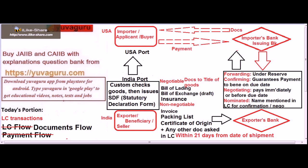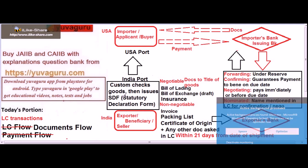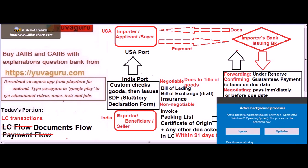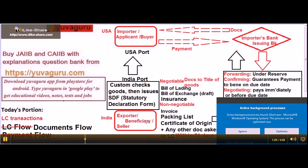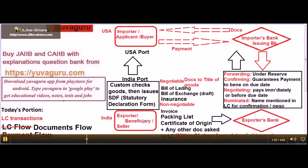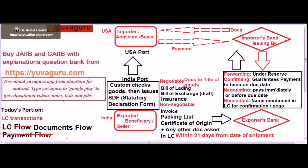Customs then issues a statutory declaration form — earlier the JR form was issued, now it has been replaced by SDF. The seller, or beneficiary, will collect this SDF document and prepare all six required documents: bill of lading (the document showing goods have been sent by sea), and the details of all six documents are shown in a separate video.